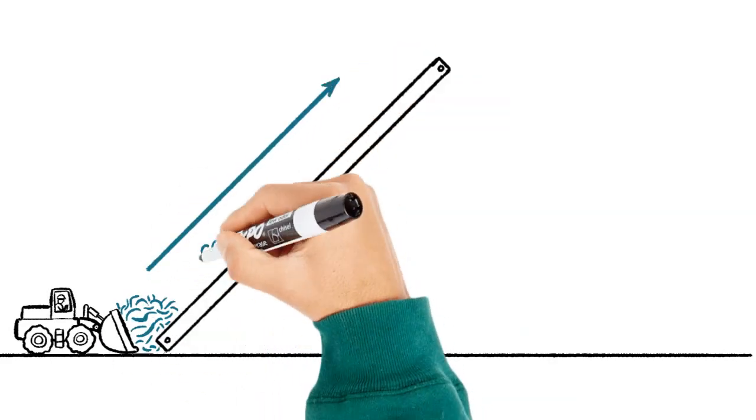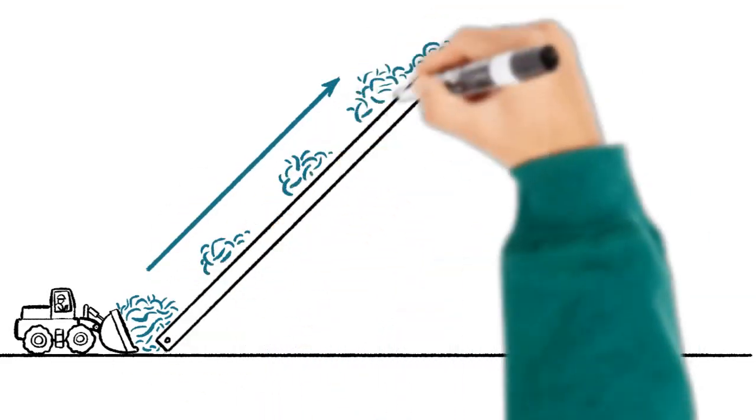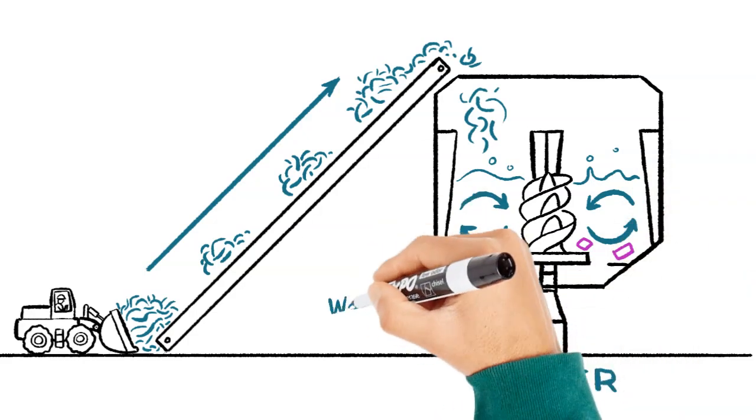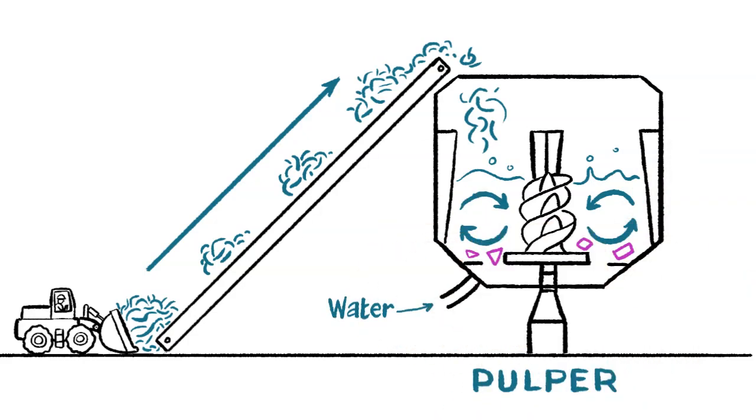First of all, the liner waste is pulped with just enough water to get the right consistency. The pulper rotor then mixes the water and paper and any accidental contaminants, like plastic remains, are separated and left in large pieces.